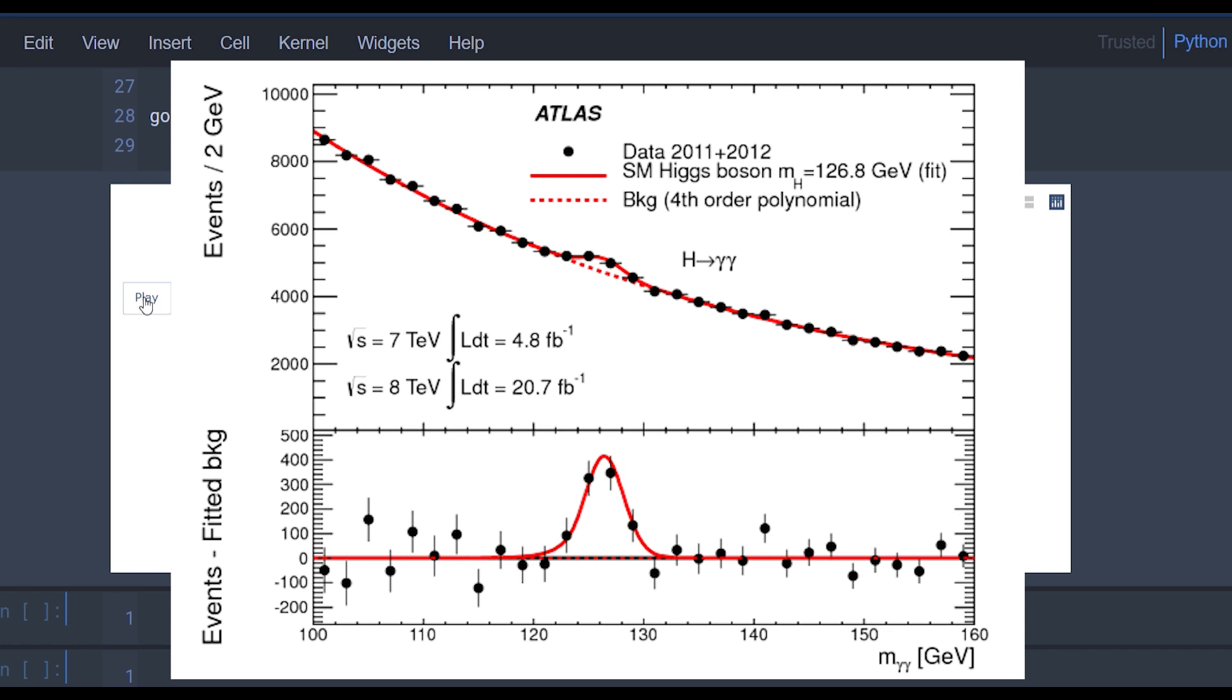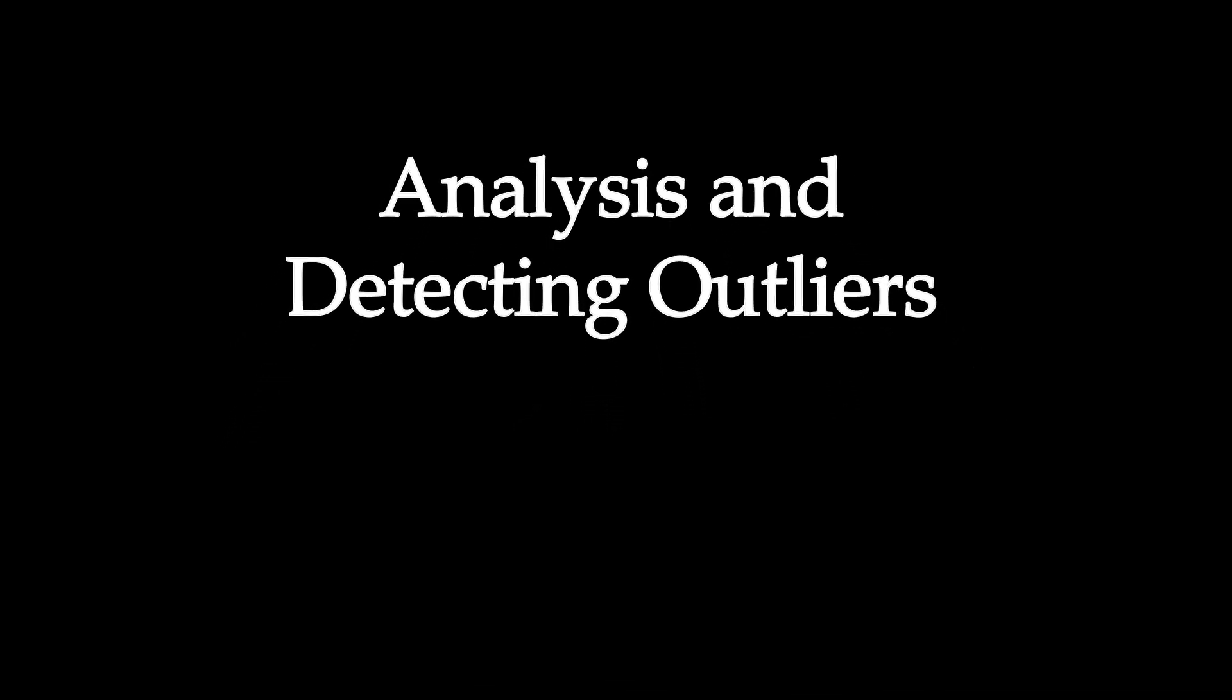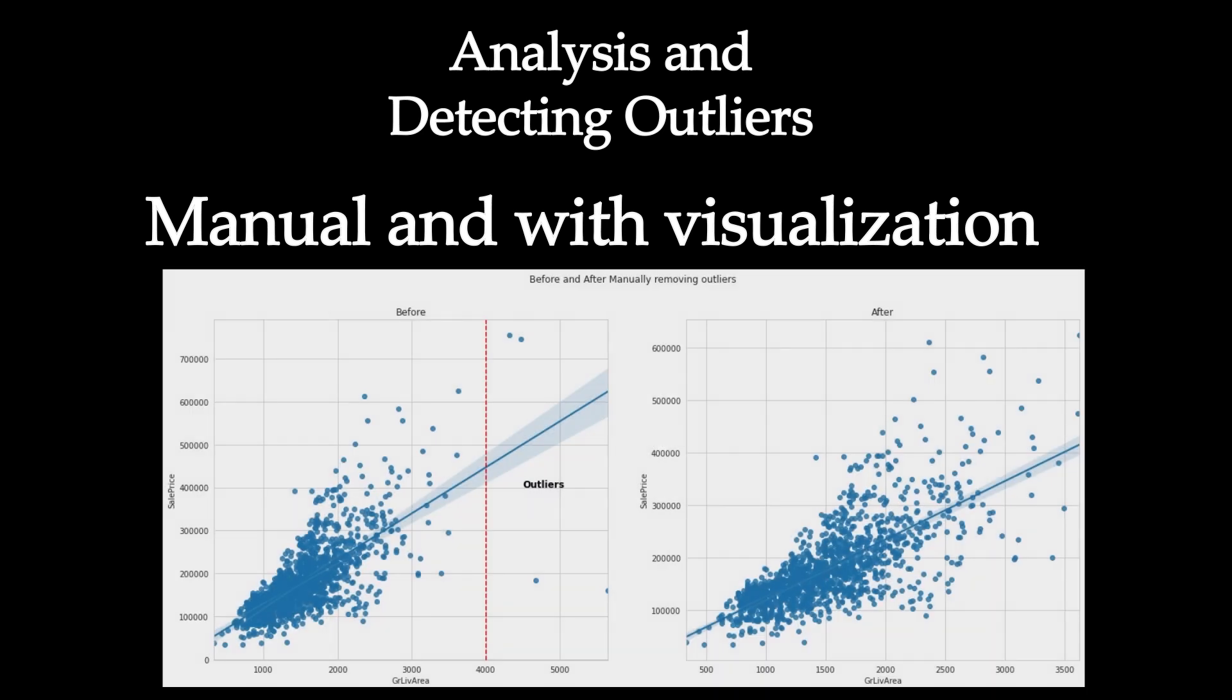Now we're going to apply some methods on a real dataset and see the results. The first method is just manually plotting the data and intuitively or even logically selecting some points that we think are definitely meaningless or are just degrading our model. In the Boston house price dataset, we can see that the author in the description says explicitly that he thinks around four points are outliers.